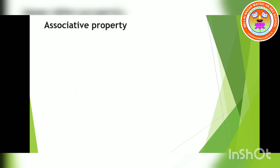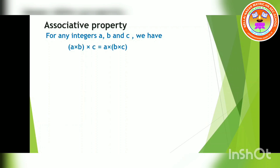Next, we move on to associative property. We will take three integers. For any integers a, b and c, we have (a into b) into c is equal to a into (b into c). The integers inside the bracket are multiplied together first, and the number outside the bracket is multiplied separately.